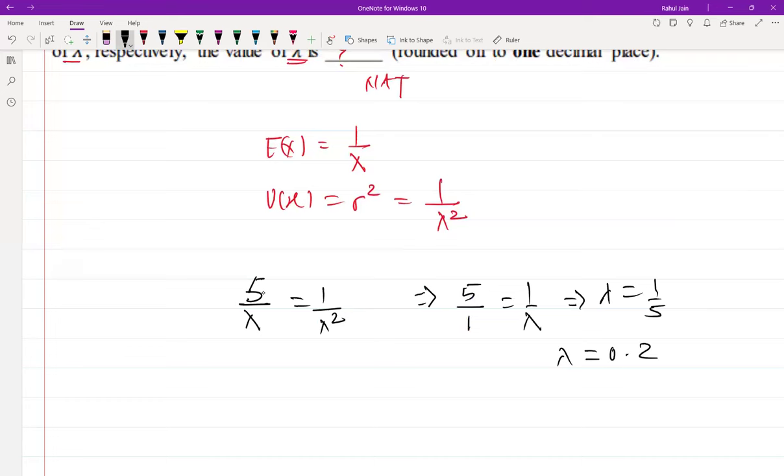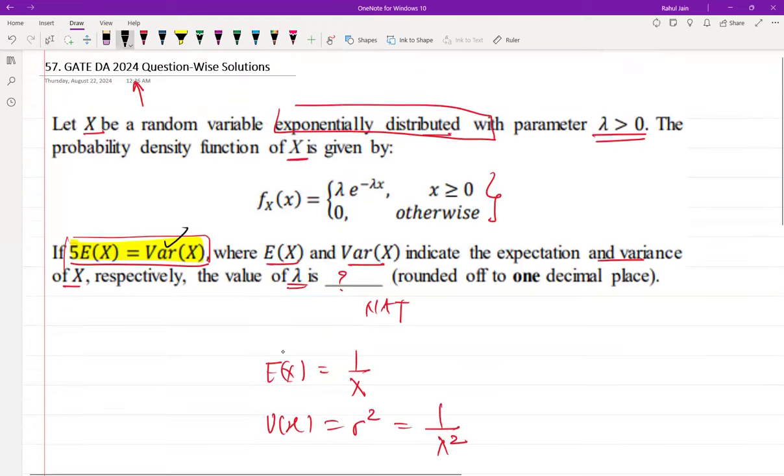So it is the correct answer for this GATE question, and the question was very simple. The correct answer is 0.2, rounded to one decimal point. Please do subscribe for more solutions.